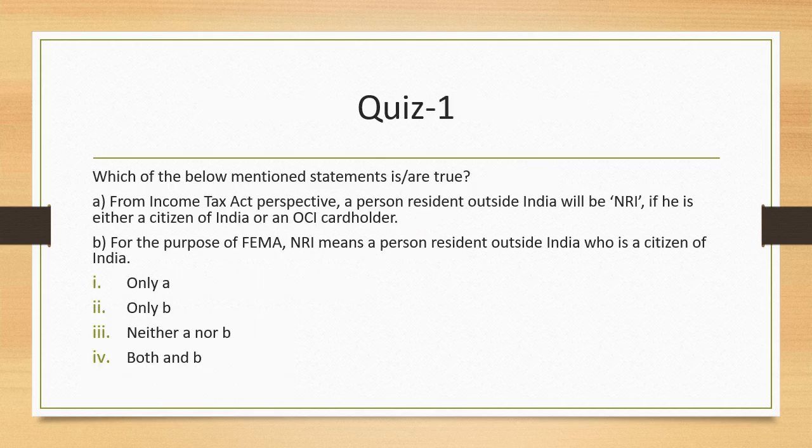Question 1: Which of the below-mentioned statements is or are true? The two statements are in the context of FEMA and Alternative Investment Funds. Statement A: From an income tax perspective, a person resident outside India will be an NRI if he is either a citizen of India or an OCI (Overseas Cardholder). Statement B: For the purpose of FEMA, NRI means a person resident outside India who is a citizen of India. Both statements are true, so the answer is D — both A and B.